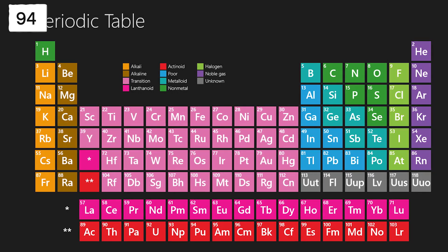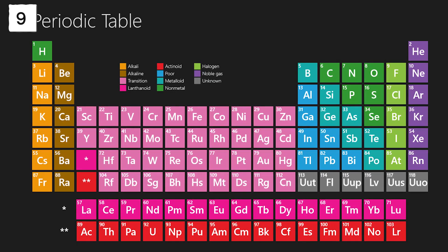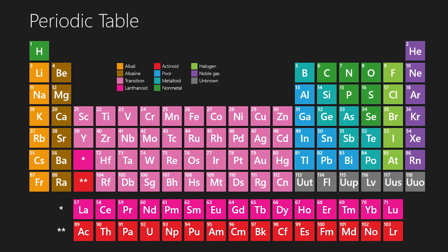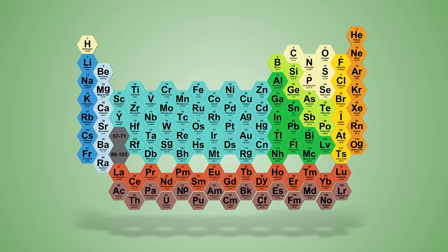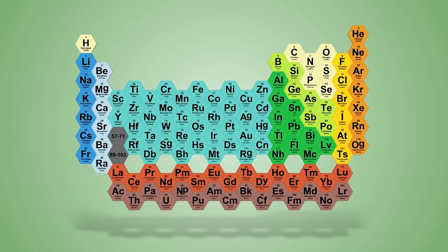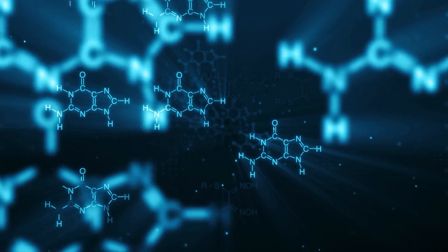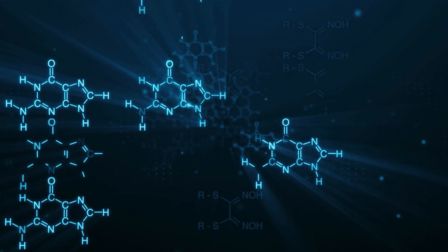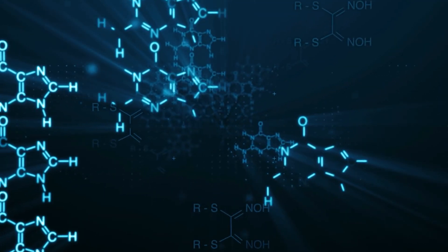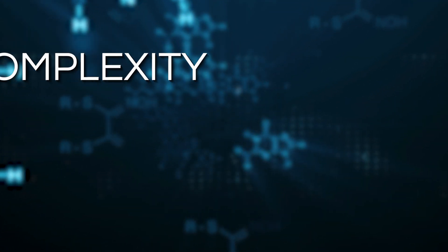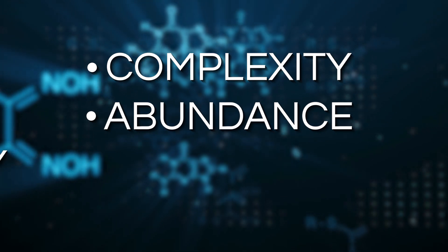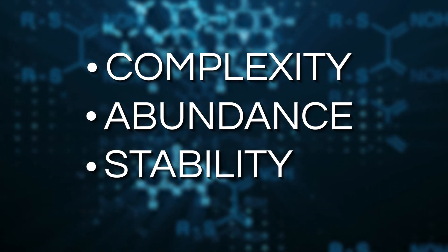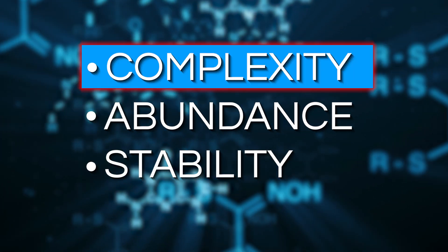There are 94 naturally occurring elements on the periodic table. With so many choices available, why is everything based on carbon? The answer lies in three key factors: complexity, abundance, and stability. Let's start with complexity.